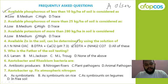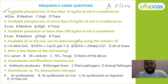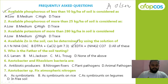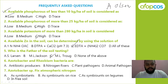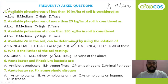Who is the father of soil testing? Options: Larson, Jackson, Trog, or none of them. The correct answer is Trog. Next: Azotobacter and Rhizobium are antibiotic producers, nitrogen fixers, plant pathogens, or animal pathogens? They are nitrogen fixers.